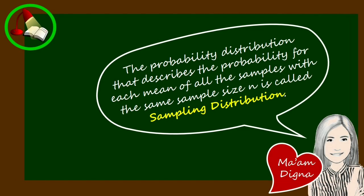Now you have learned that the probability distribution that describes the probability for each mean of all the samples with the same sample size n is called sampling distribution. Thank you.